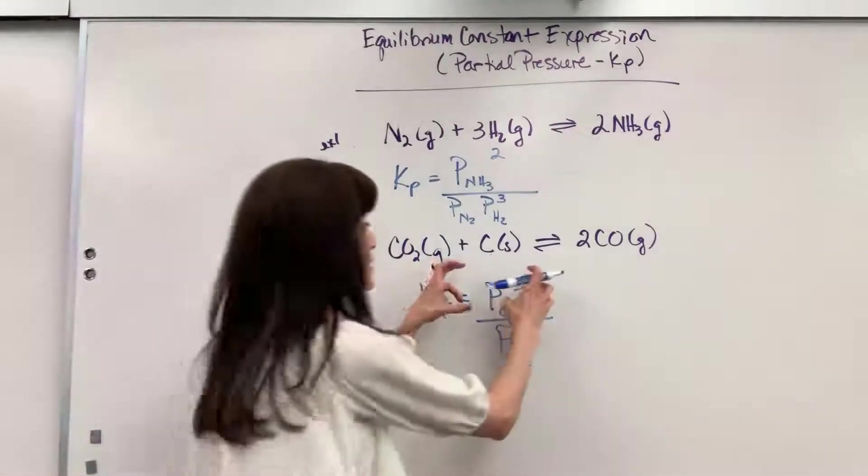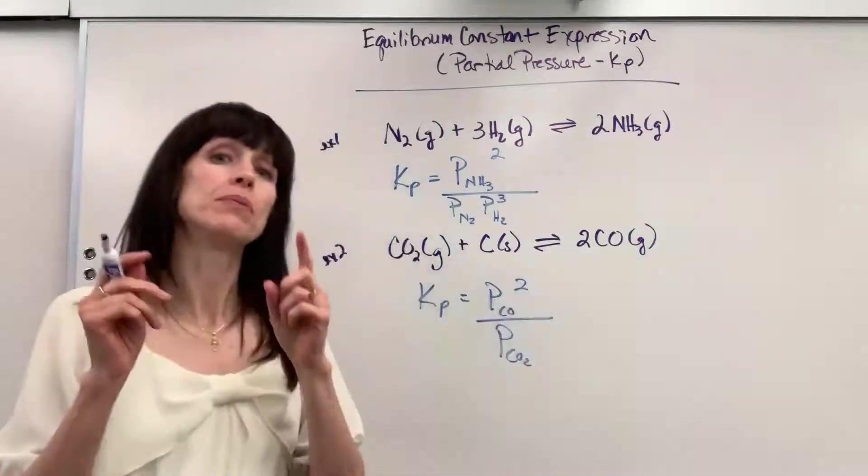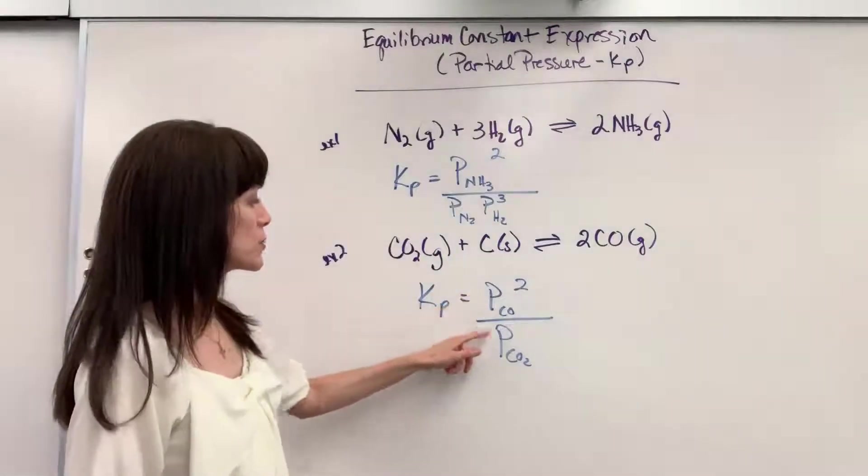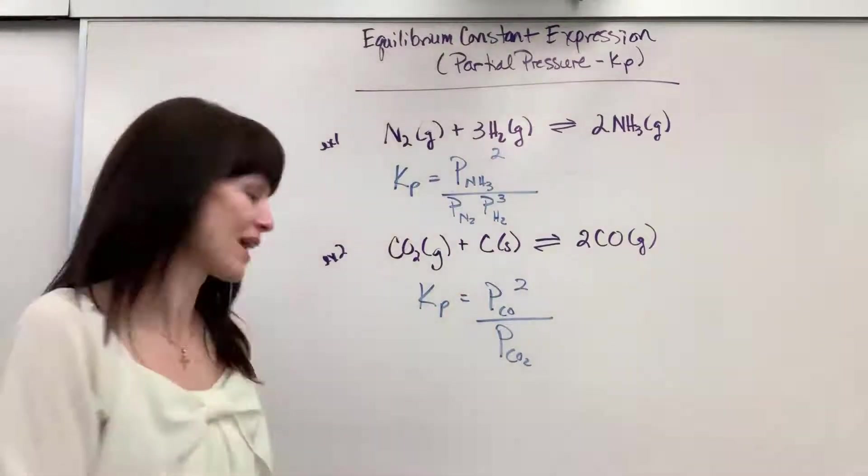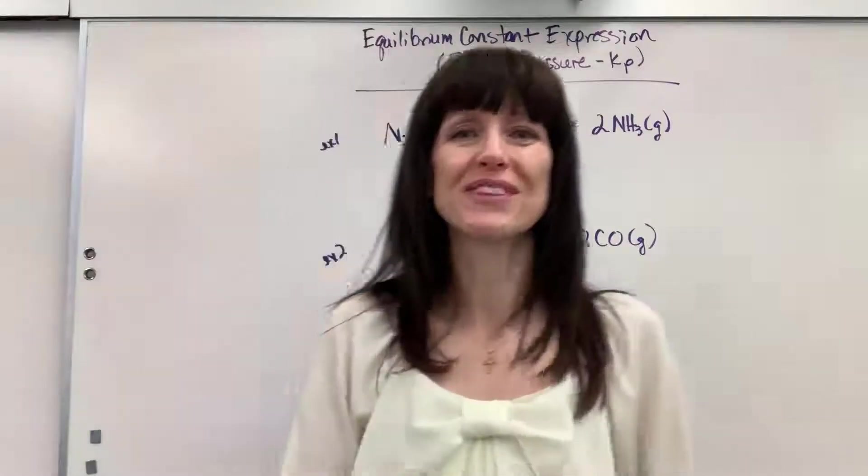Divided by partial pressure of carbon dioxide, understood to be the first. So if they give you concentrations, then you'd write those brackets. But given partial pressure, you do the partial pressure of those gases. Okay? Good work. Have a wonderful day. Thank you.